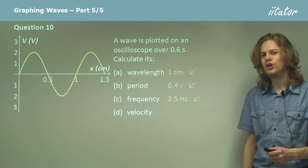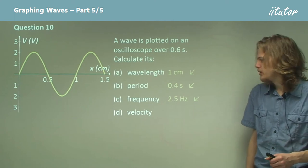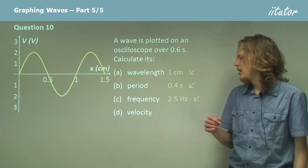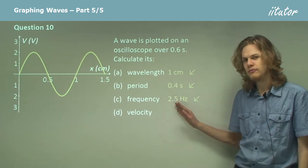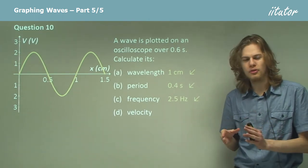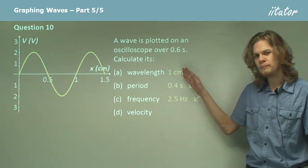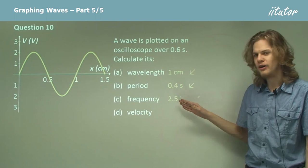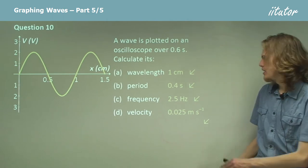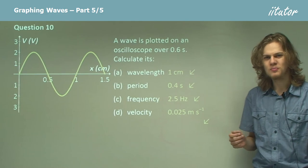Finally find its velocity. Now how would we go about doing that? Well we can use V equals F lambda. Our frequency is 2.5 and our lambda wavelength is 1 centimeter, which of course is equal to one-hundredth of a meter if we're using SI units. So we take one-hundredth, we multiply it by 2.5, and what do we get? Well we get, of course, 0.025 meters per second, which is the same as 2.5 centimeters per second.